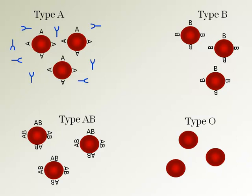Blood type A has A markers on the surface of the red blood cell and an anti-B antibody that will attack any cell with a B surface marker. Therefore, it will not attack itself, but will clump with any incoming blood with a B marker present. Blood type B has B markers on the surface of the red blood cell and an anti-A antibody that will attack any cell with a surface A marker. Therefore, it will not attack itself, but will clump with any incoming blood with an A marker present.